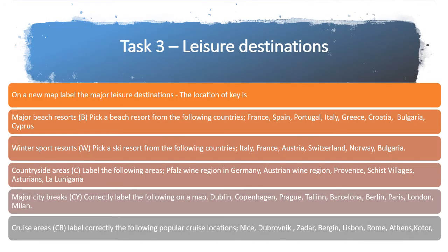Then print out a new map for task three. This is where you start to put all the leisure destinations on it. You've got to show examples of beach resorts, winter sports resorts — which are ski resorts — countryside areas, major city break areas, and cruise areas.